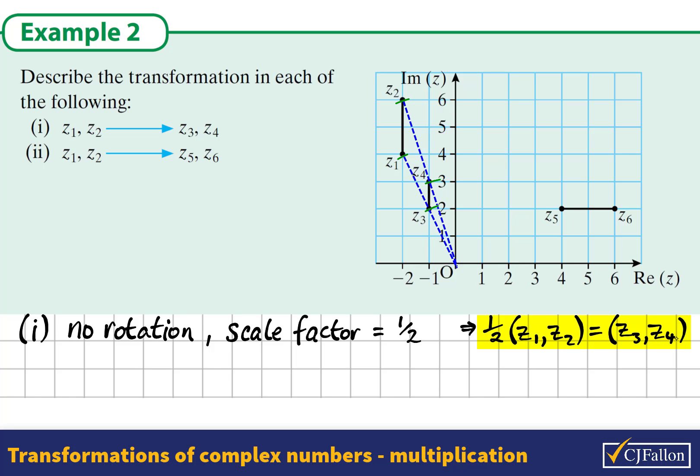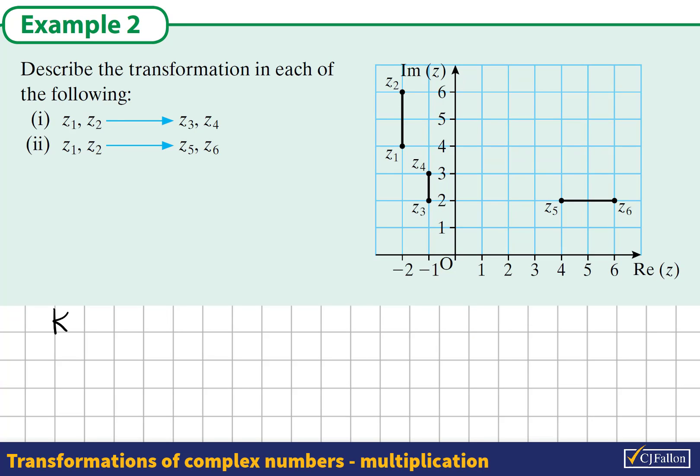This is a geometric approach to the problem. There is another approach you could take. Once you understand that this transformation is multiplication, that Z3 is some multiple of Z1, we could say that K, that multiple, will be Z3 divided by Z1. So we could use the numbers available in the Argand diagram.